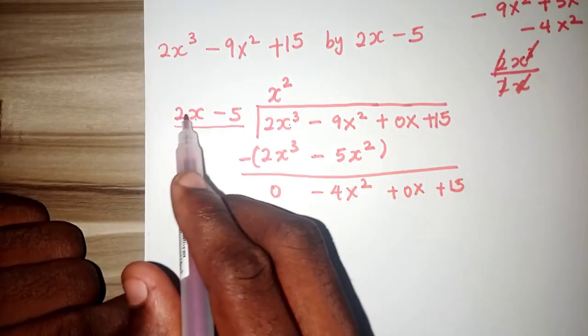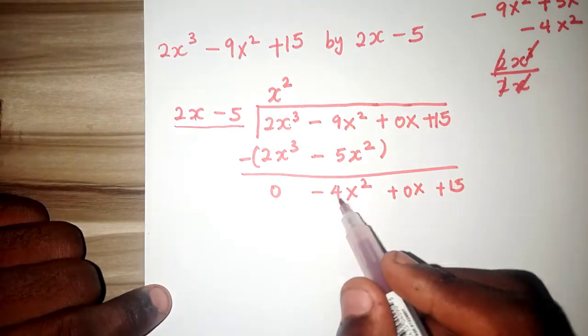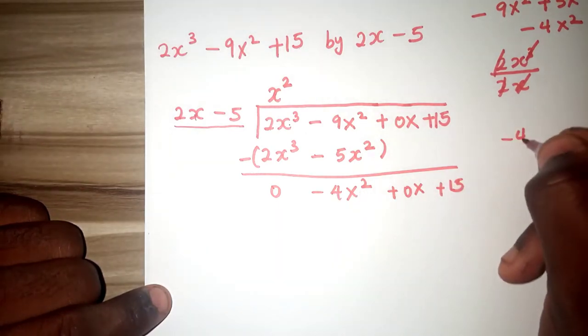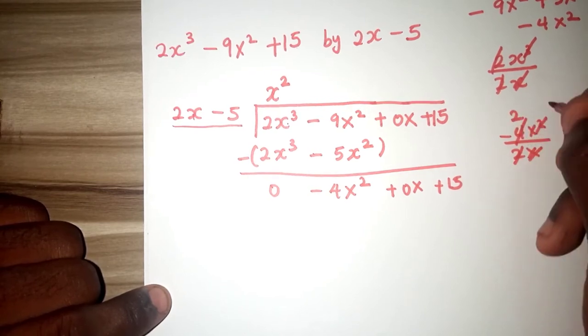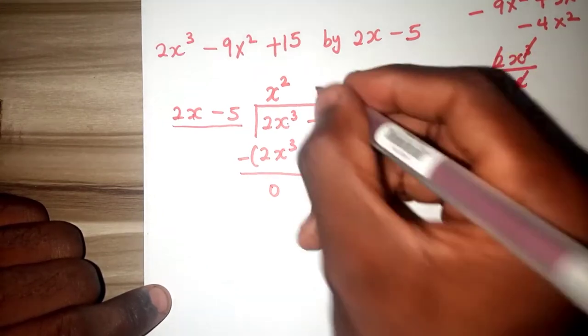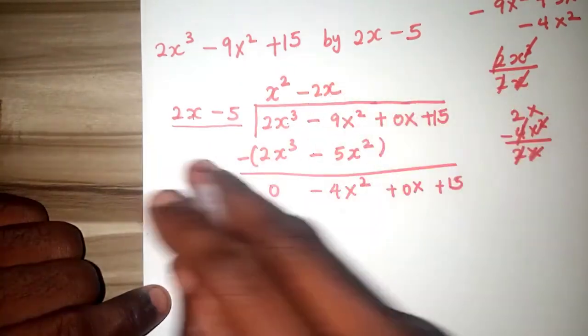Now let's divide again, 2x divided by minus 4x squared, minus 4x squared over 2x, this will give us 2, and this one will give us x, so we are having minus 2x.